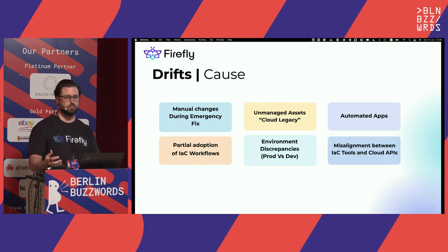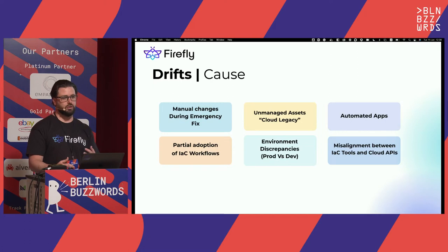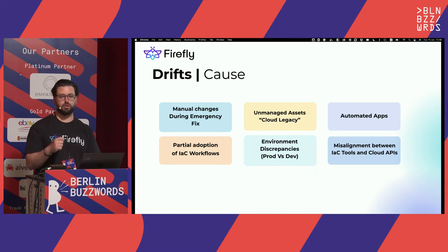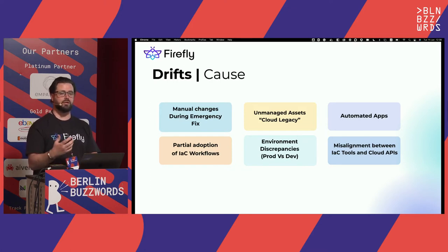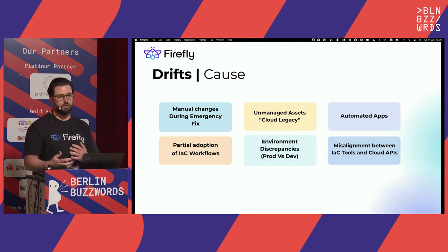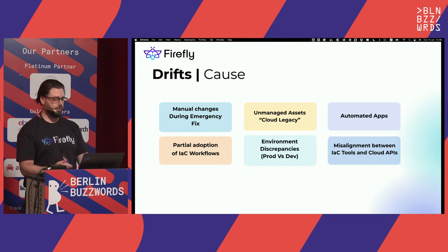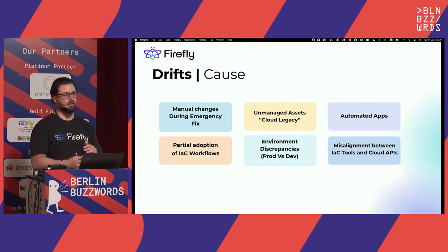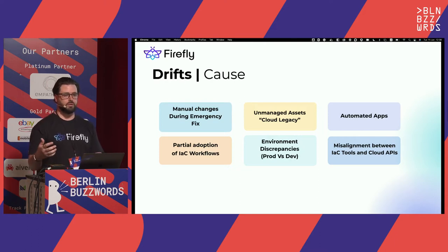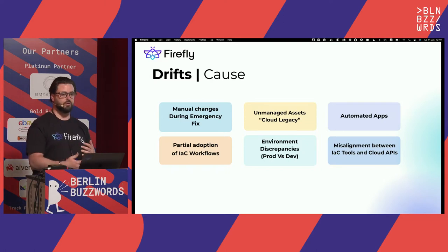Another reason is partial adoption. To enjoy the full advantages of infrastructure as code, the recommendation is to deploy the entire cloud through IaC and give permissions only to Terraform to provision resources, so typical engineers don't have direct access to the infrastructure workloads — and this avoids drift. But in reality, in the organizations we talk with, only certain workloads like new projects are done with IaC, and because different teams have access to the cloud console, drift happens.